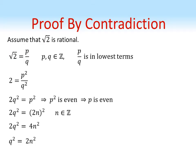So now we've shown that q squared is also a multiple of 2, hence q squared is even, which implies that q is even.